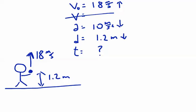We know that the starting velocity is 18 meters per second in the upward direction. We know that on Earth, gravity accelerates all objects at 10 meters per second squared in the downward direction. And we can see that the displacement of the ball is going to be 1.2 meters, also downward.